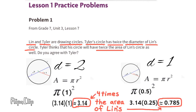3.14 is four times larger than 0.785. This tells me that the area of Tyler's circle is four times larger than the area of Lynn's circle — not two times larger, or twice the area of Lynn's circle, like Tyler thinks.